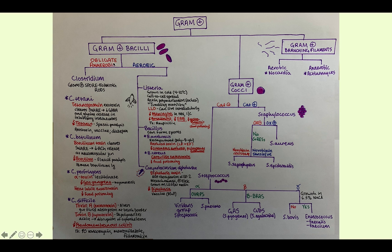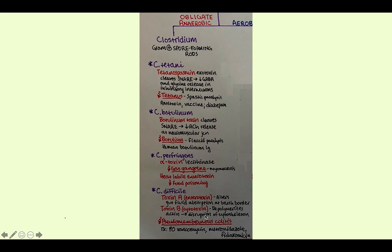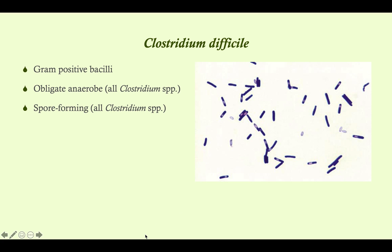Here's our algorithm. We're still talking about gram positive bacilli — this is Clostridium species, although C. diff is often called Clostridioides difficile. These are all gram positive spore-forming rods and all obligate anaerobes. After this we'll move on to gram positive aerobic bacilli: Listeria, Bacillus, and Corynebacterium, the cause of diphtheria. This is the fourth and final of our Clostridium species. All Clostridium are gram positive bacilli, obligate anaerobes, and spore-forming.